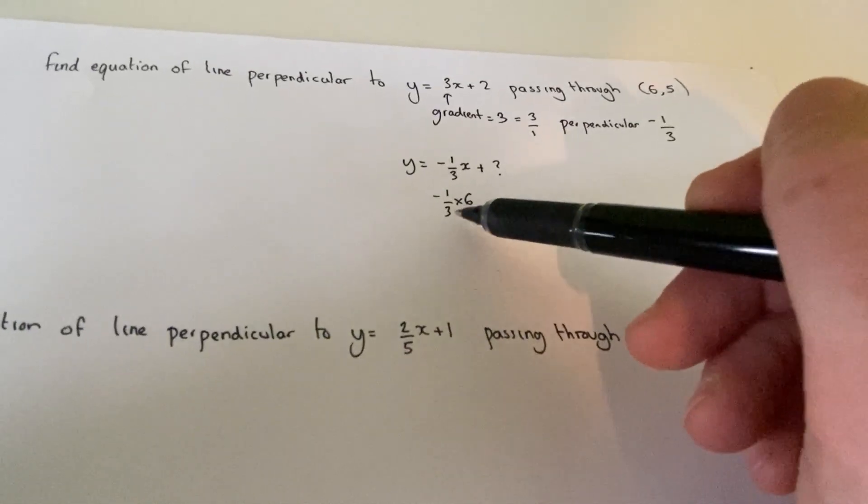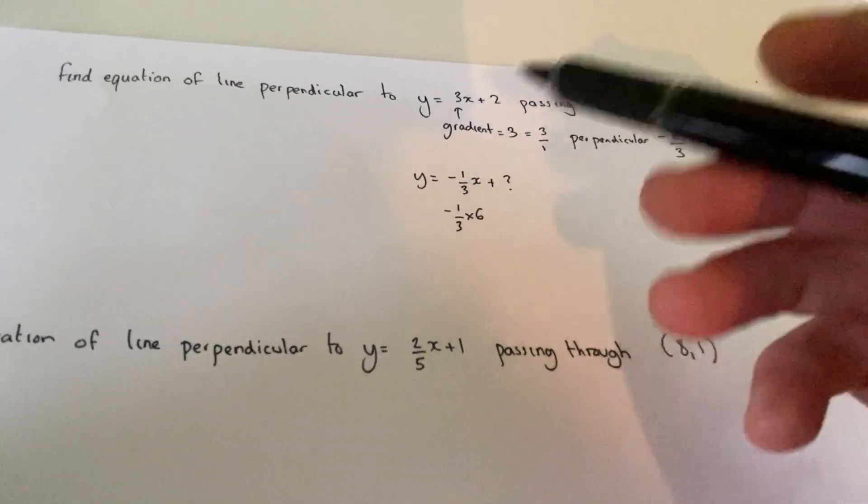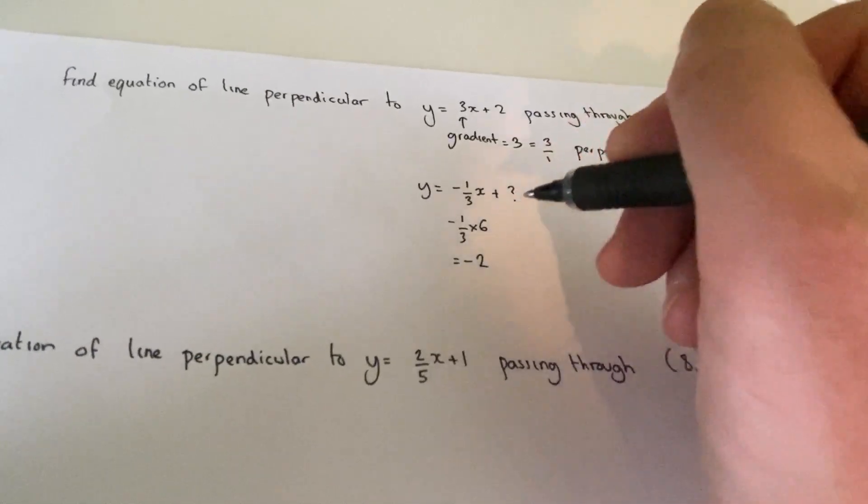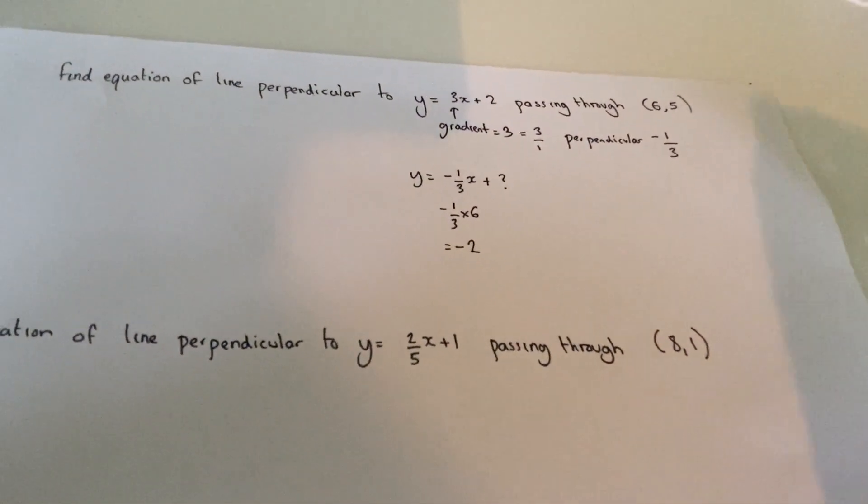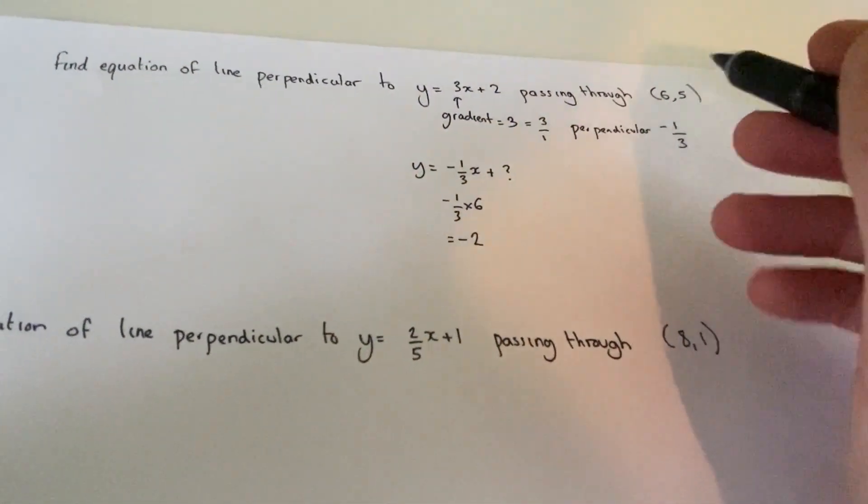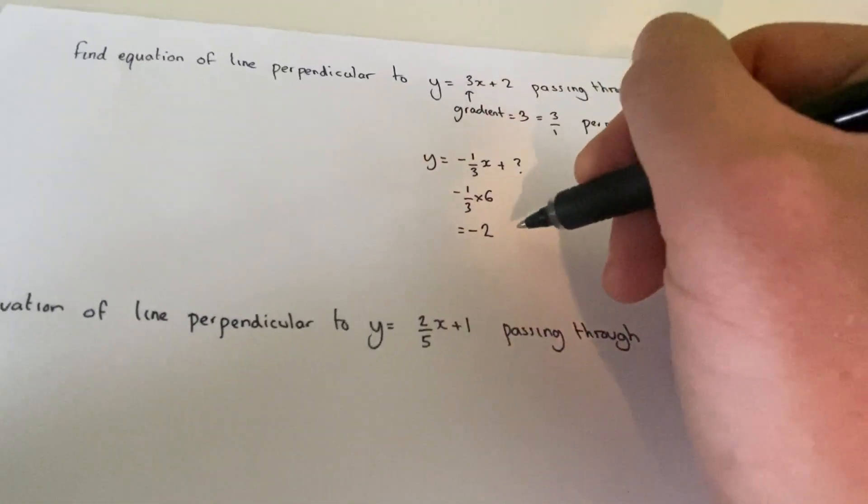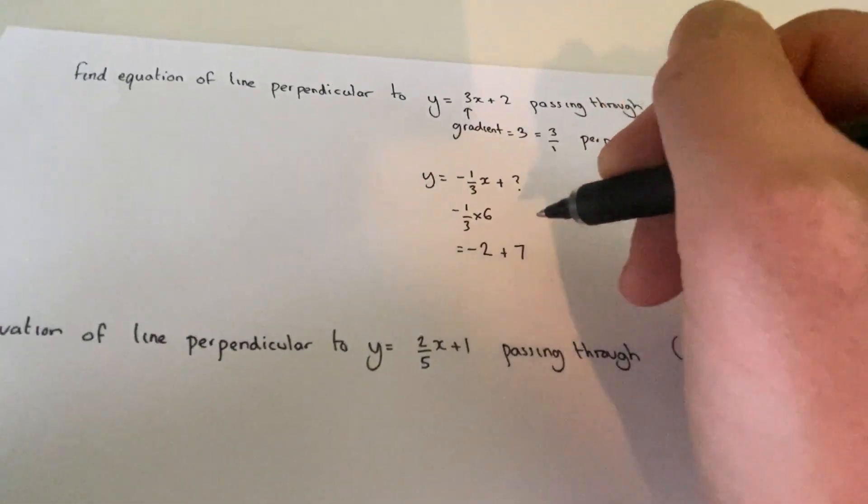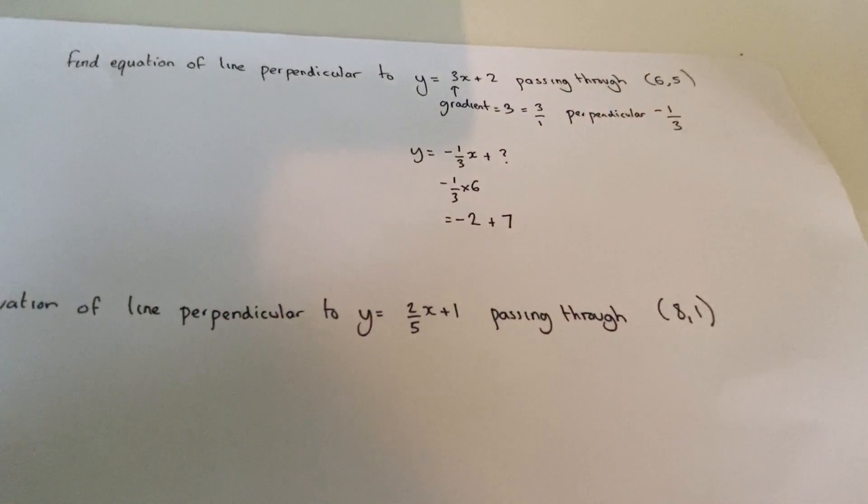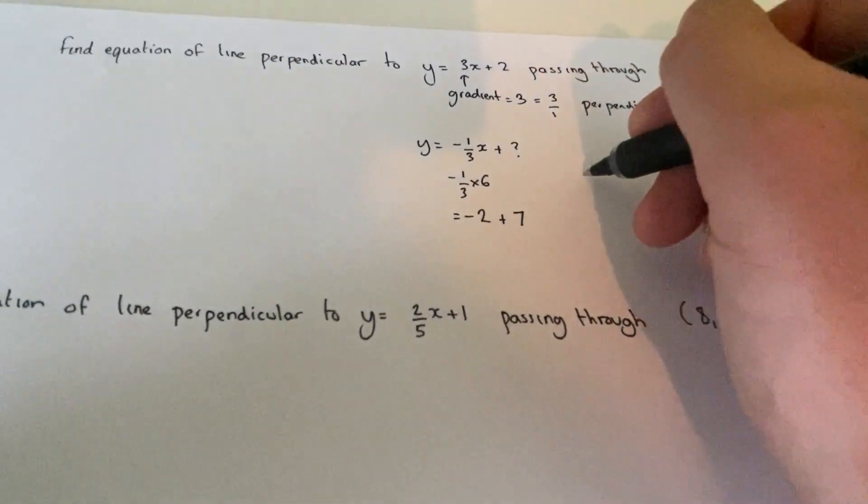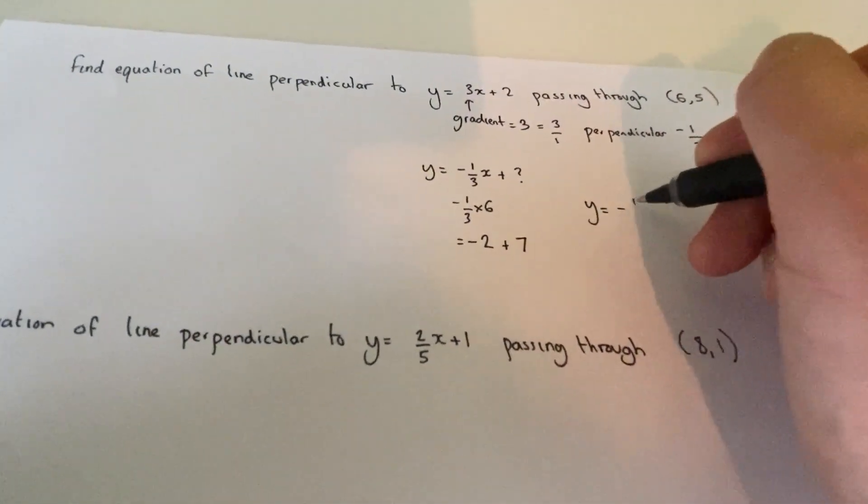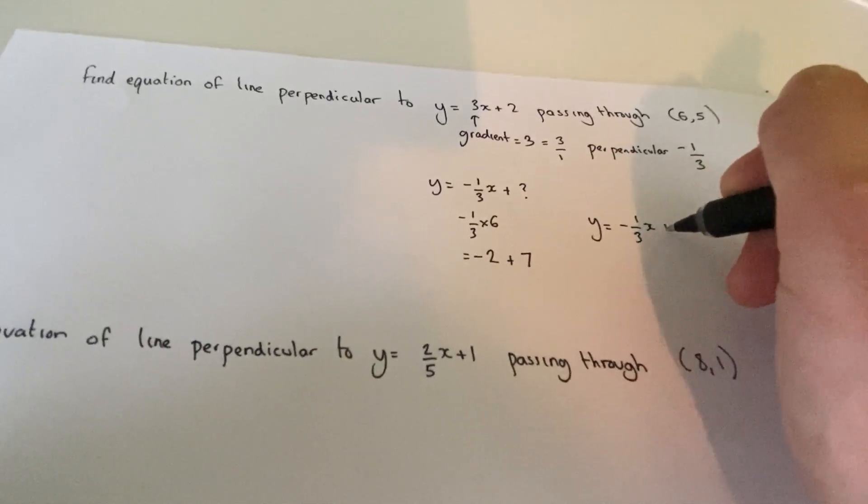So a third of 6 is 2, is negative. So this equals negative 2. But the answer is meant to be 5. So to get minus 2 back up to 5, I need to add on 7. And this is basically the y-intercept.